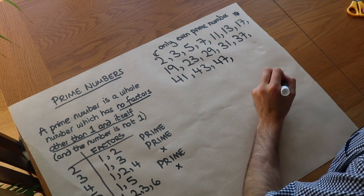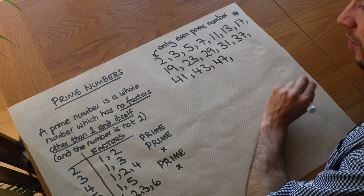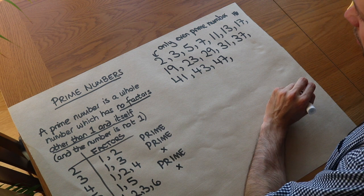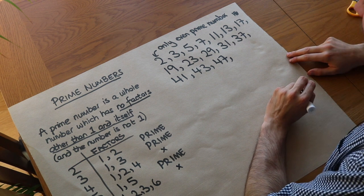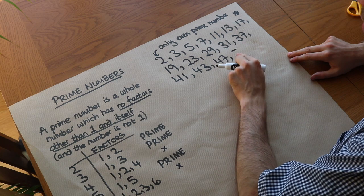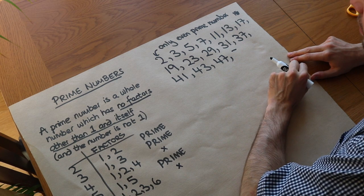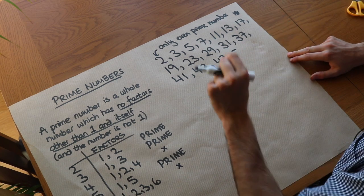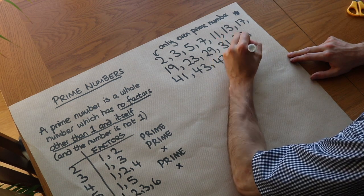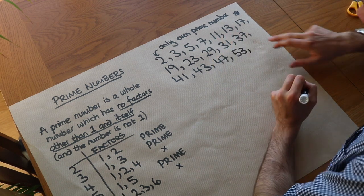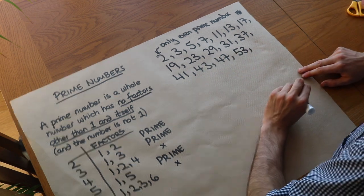Forty-nine is a harder one to spot. But it's seven squared — 49 is seven times seven — so it has a factor of seven and is not prime. Fifty-one: digits add up to six, a multiple of three, so it divides by three — not prime. Fifty-three is prime. Fifty-five ends with a five and therefore divides by five — not prime.